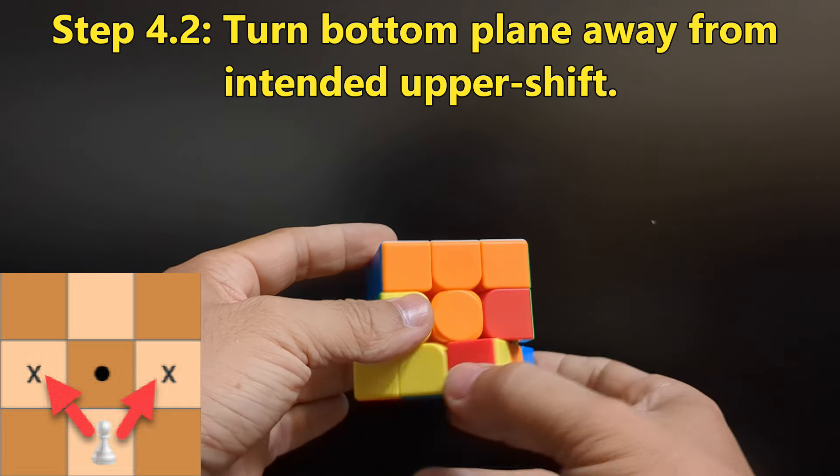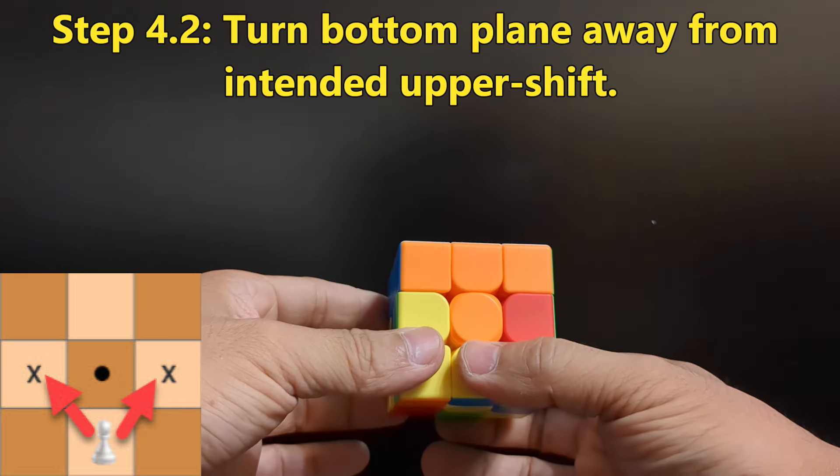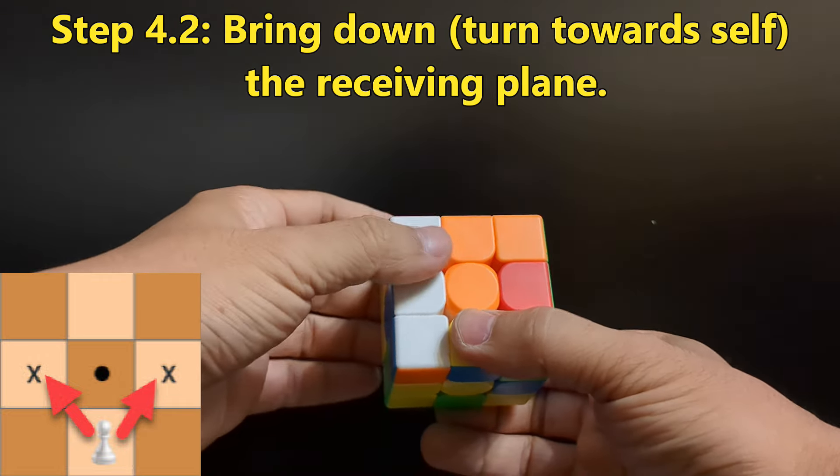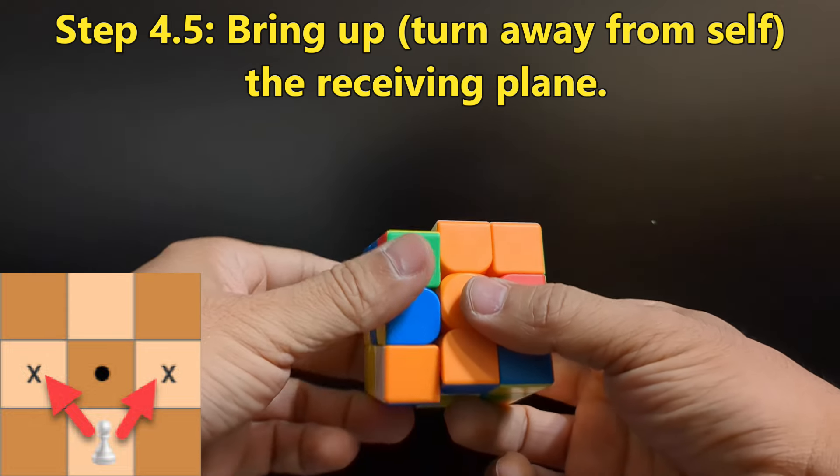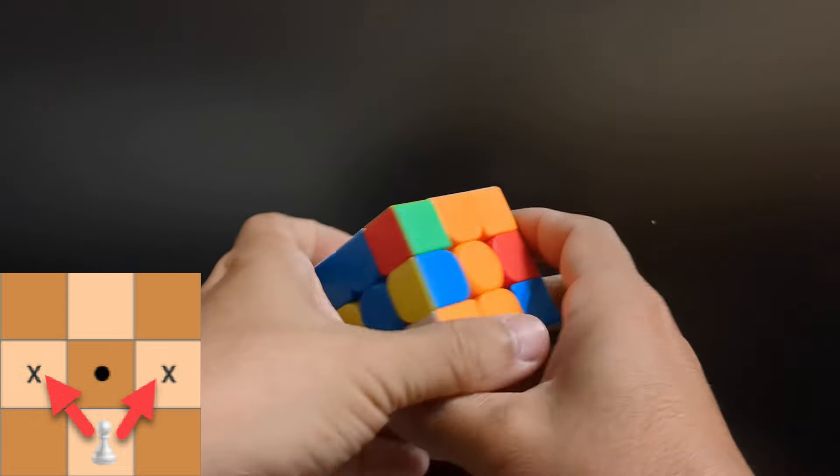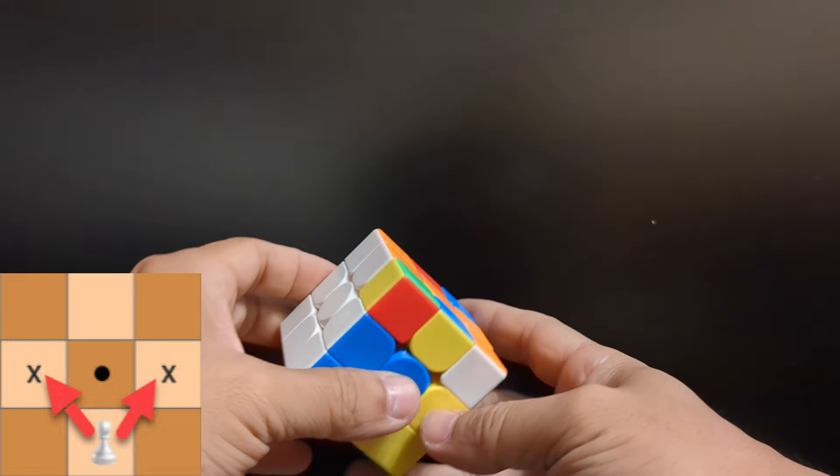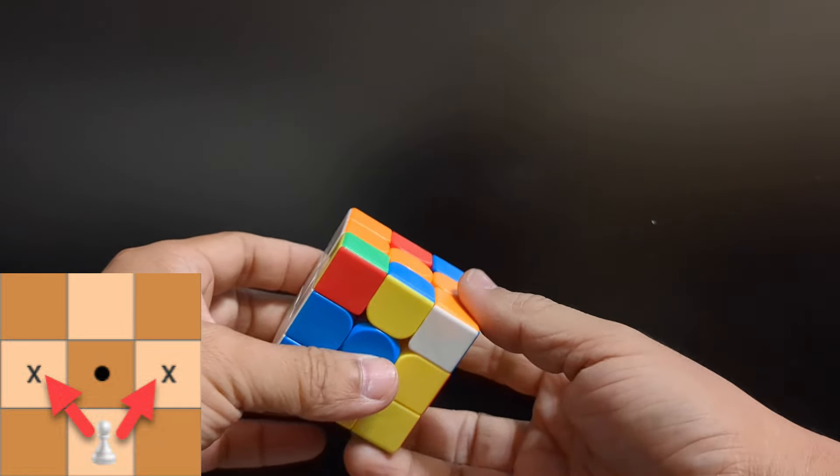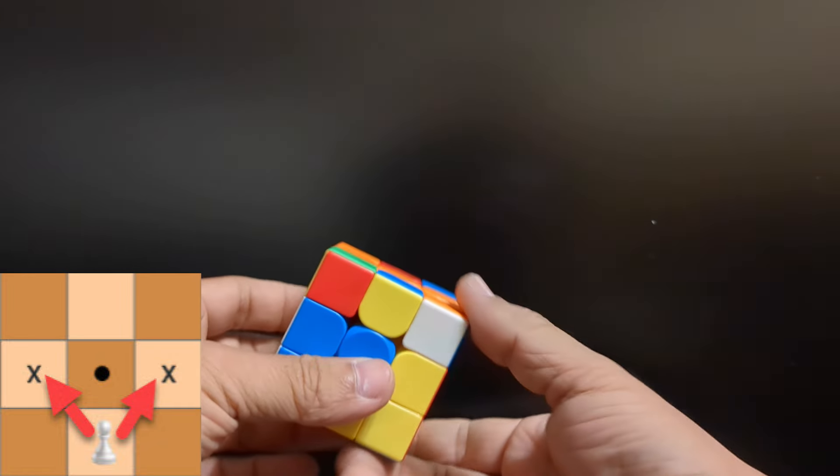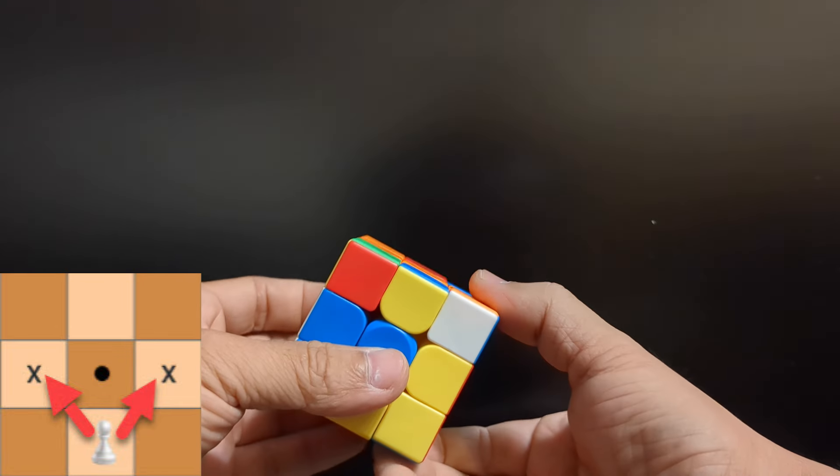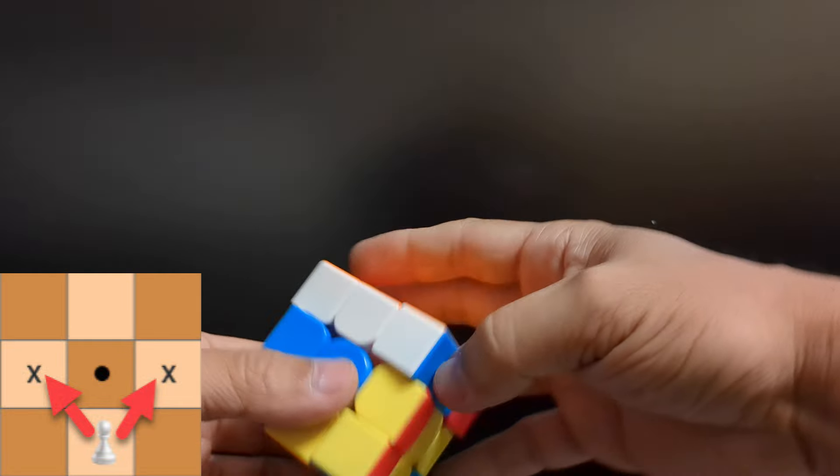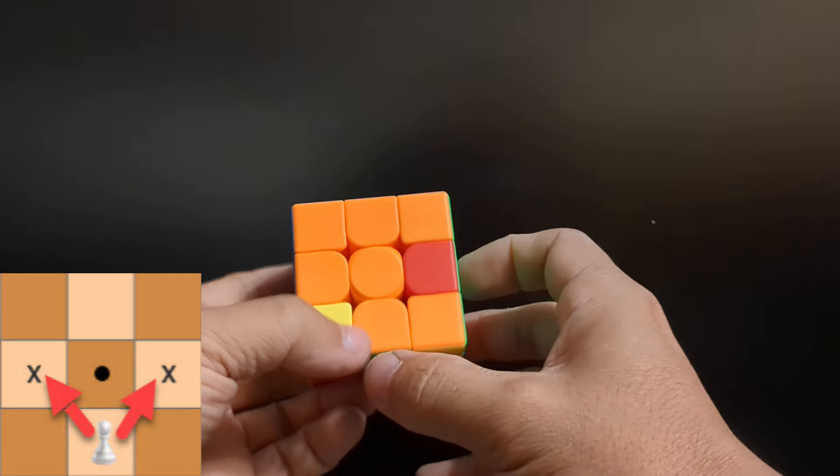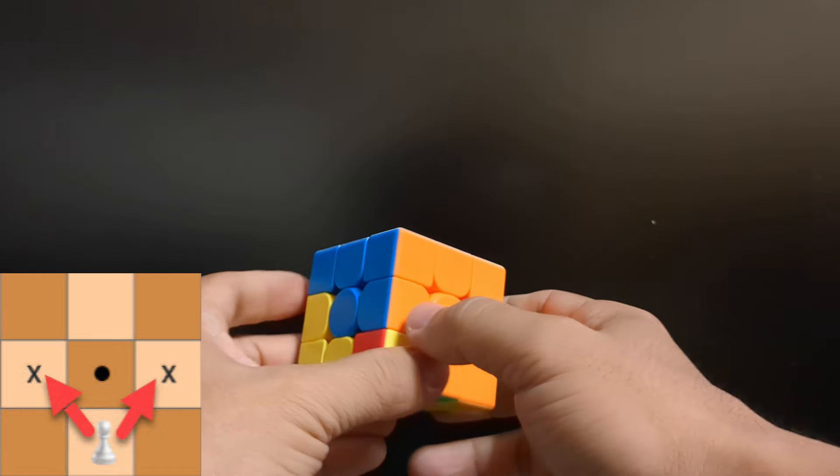Now, just like in the first step, restore this corner by taking it out of the turning plane. Bring it down, bring it back up. Notice how we have the orange and blue in its appropriate place.